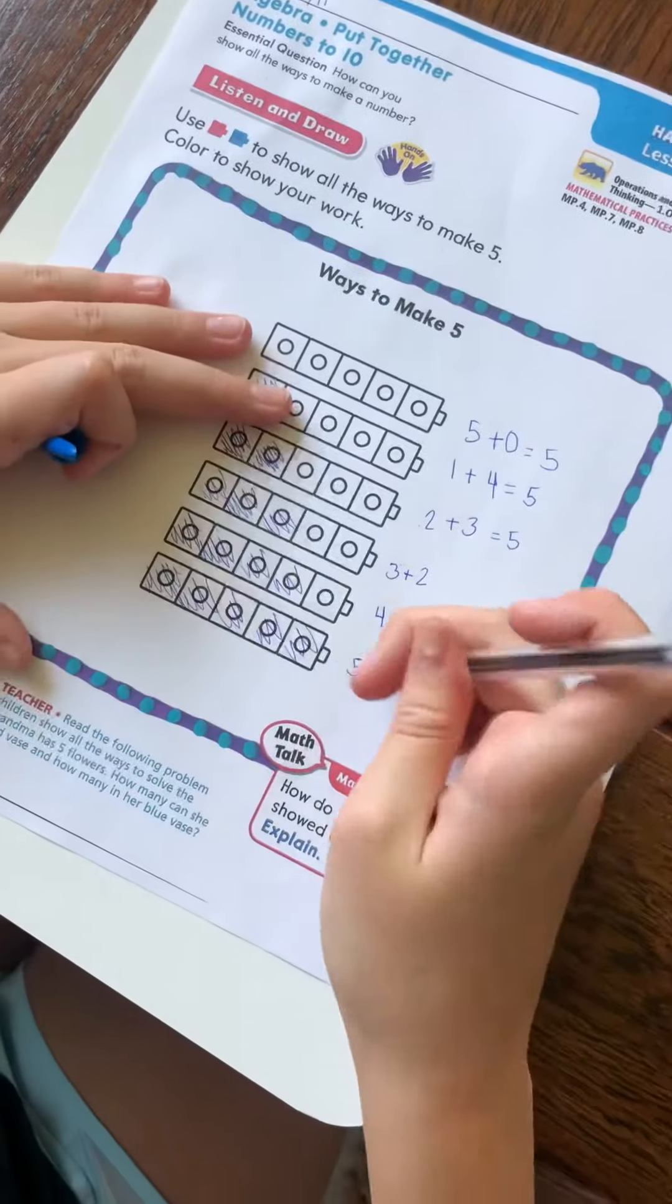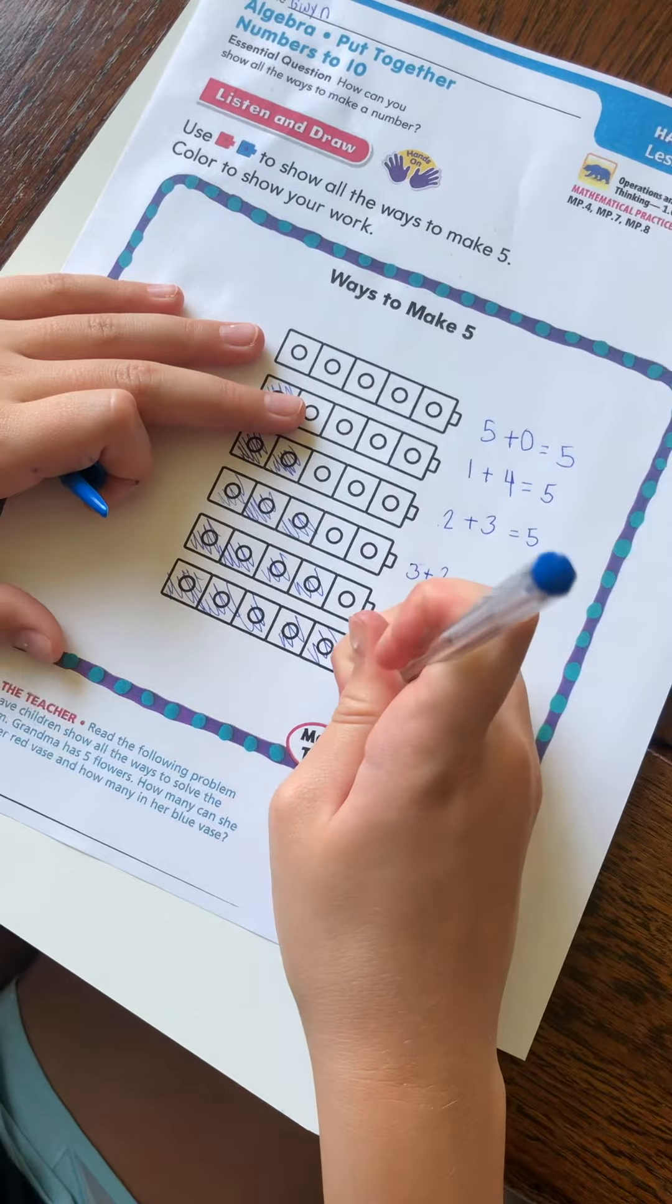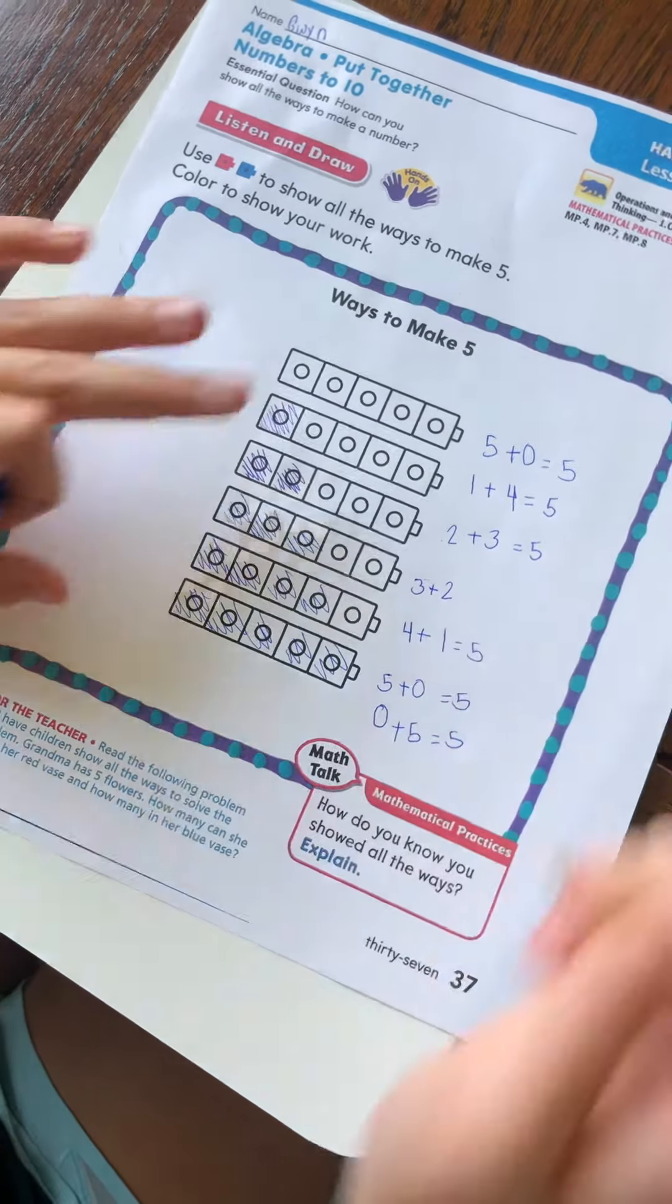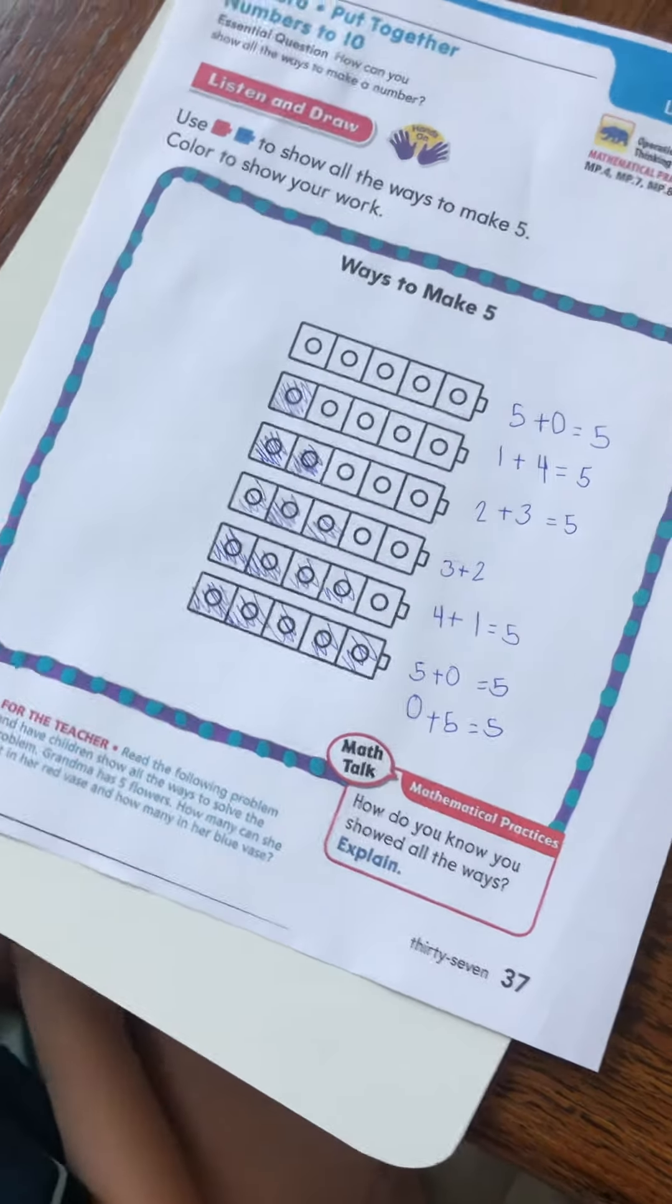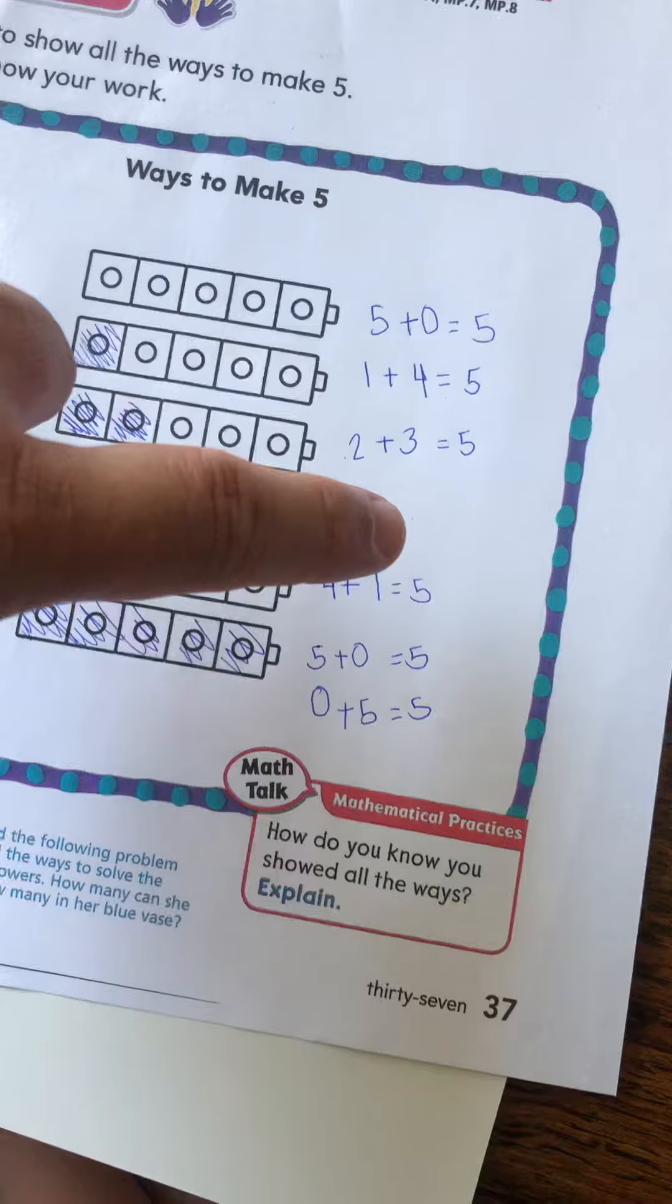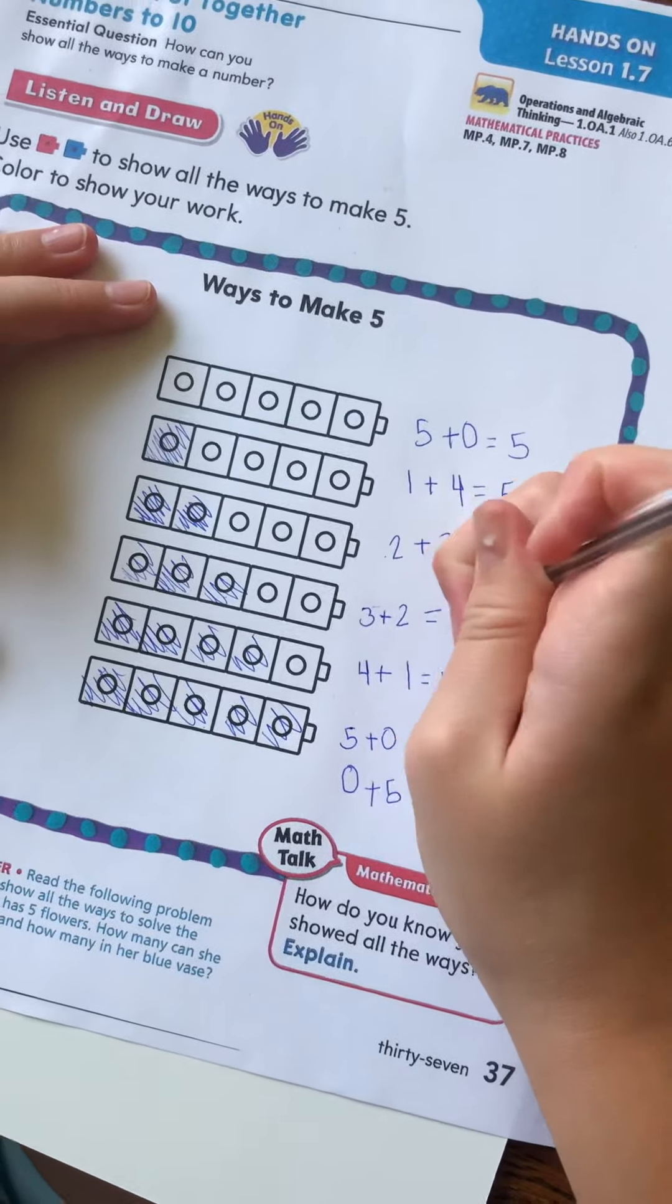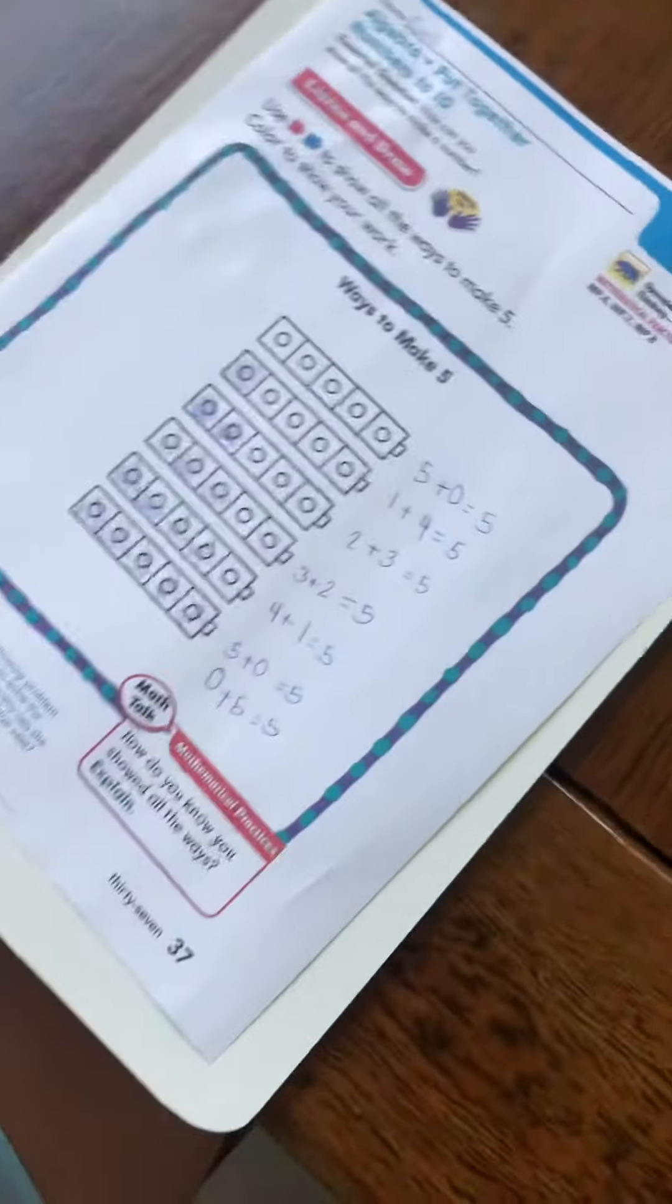What would it be? Oh well, what if I do 0 plus 5? It still equals 5 because that's the commutative property of addition. Yep, and we forgot something, that's the equals sign right there. Nicely done Gwen, good job!